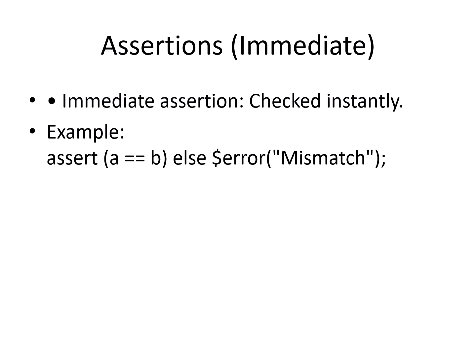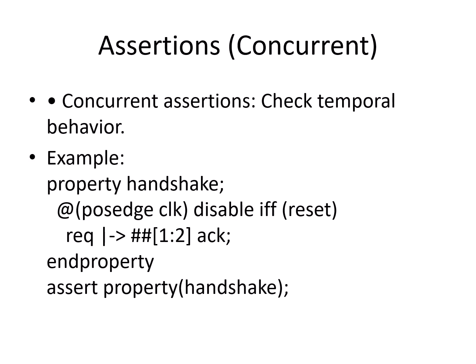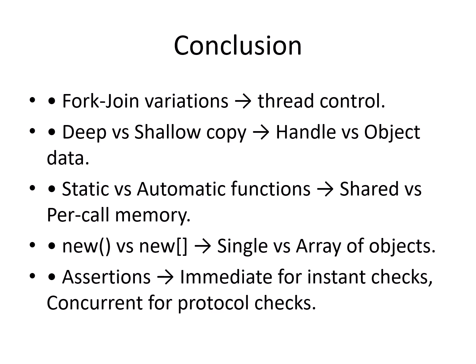The last question was about assertions. I explained that an immediate assertion checks a condition at a single point in time. A concurrent assertion checks a timing relationship across cycles — for example, ensuring that if a request comes, a grant should come in the next cycle. These are some real interview questions I was asked, and I hope my explanation helped you understand the concepts better.